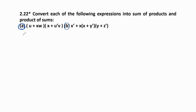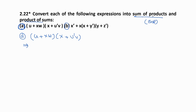Let us take part A. The first expression is u plus x·w plus u·x plus u'v. This is our Boolean expression. Sum of products, also called SOP form, and similarly product of sums, also called POS form. To write the SOP form, we should multiply these two terms.